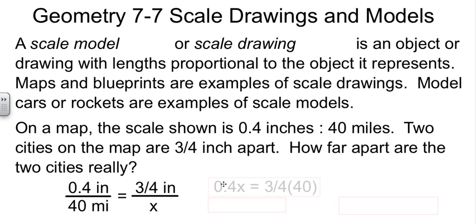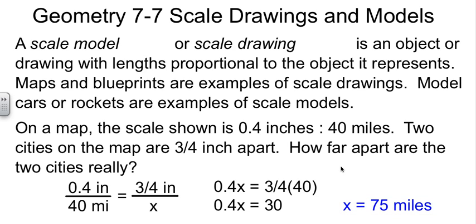Now, from here, cross-multiply. 0.4x equals three-quarters times 40. Clean that up. Three-quarters times 40 is 30. Then do a little division. And we find out that the two cities happen to be 75 miles apart.